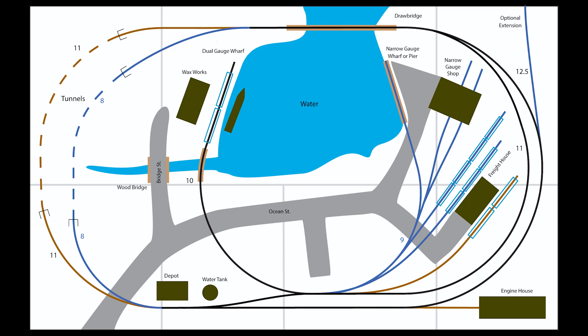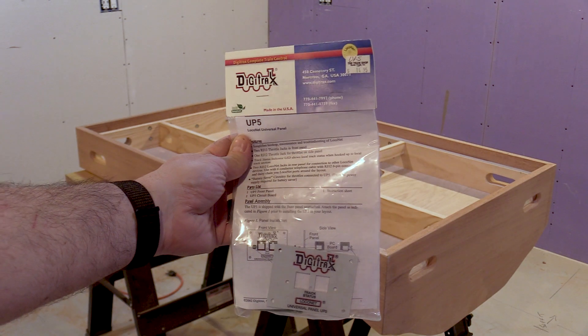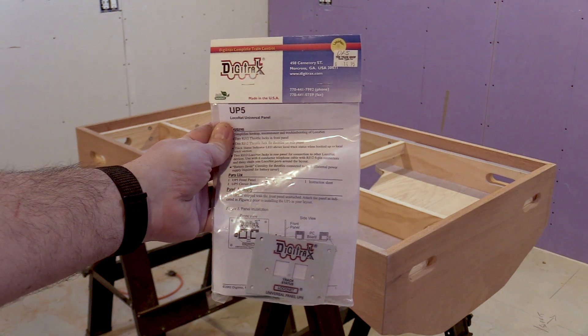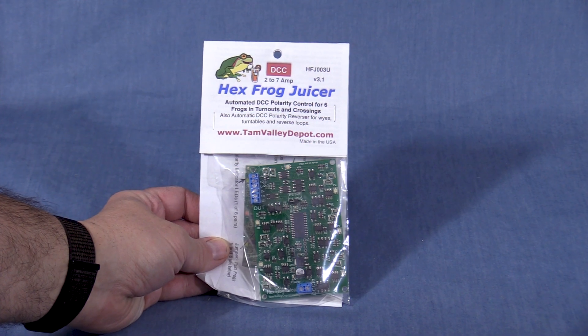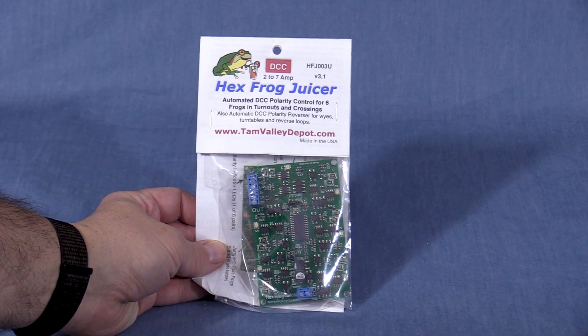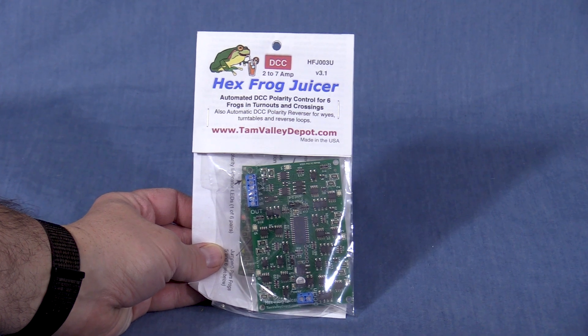I intend to put at least two plug-in throttle connections on the layout fascia. This layout is small enough that I don't think wireless throttles are necessary. Powered turnout frogs are going to be a necessity to prevent stalling with the short wheelbase steam locomotives that I intend to run on this layout.